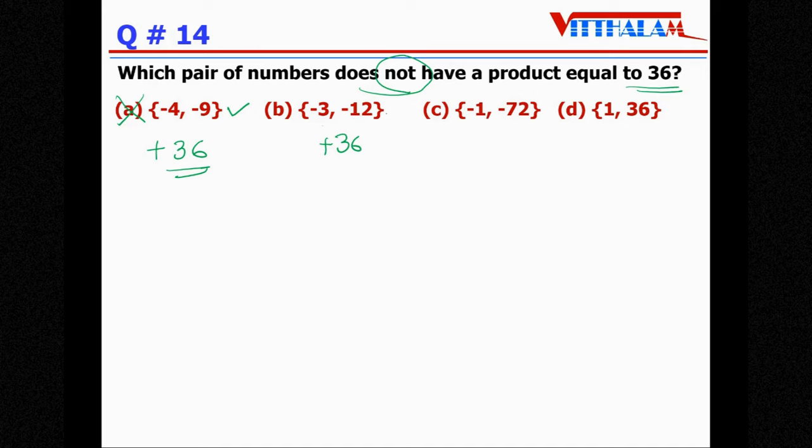Minus 3 minus 12, 12 threes are 36 and both are minus so sign is plus, equals 36, this is not the answer. Minus 1 into 72, even the product is 72 it's not equal to 36 so this is our answer. Let's see d, 1 into 36 is 36 so this equals to 36 not the answer, so our answer is c.